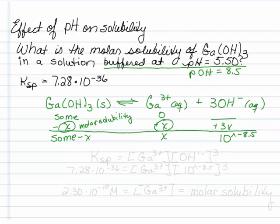My Ksp expression is going to be equal to my gallium concentration times my hydroxide concentration cubed. I know my Ksp. It is 7.28 times 10 to the minus 36. If I can find my gallium concentration, I also know my molar solubility, and I know my hydroxide concentration is 10 raised to the minus 8.5, and that quantity is cubed.